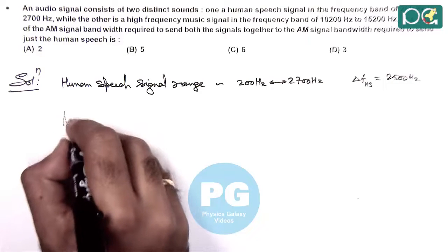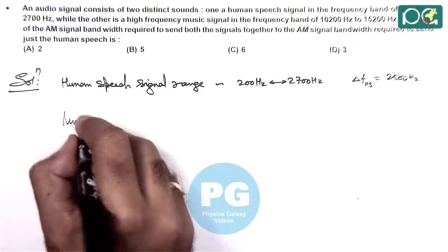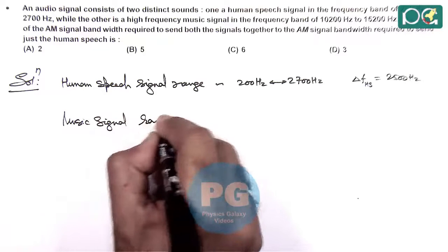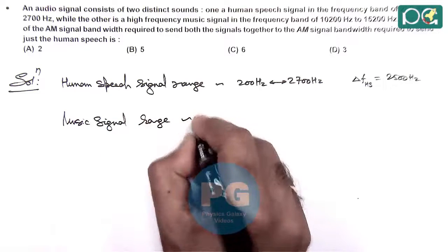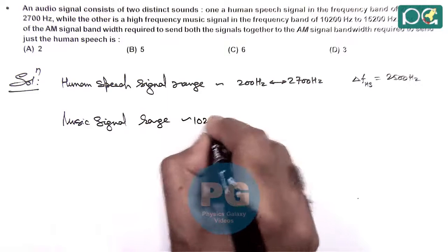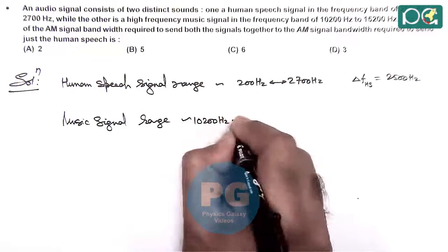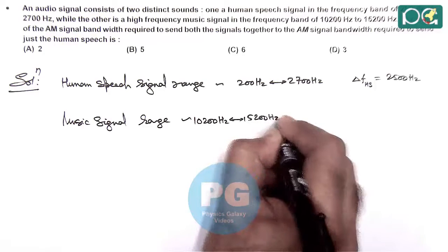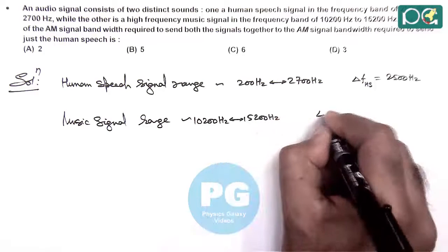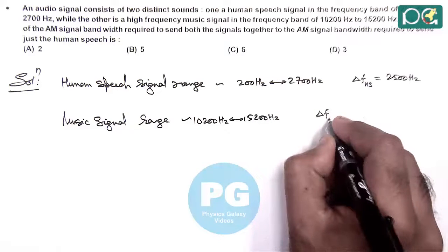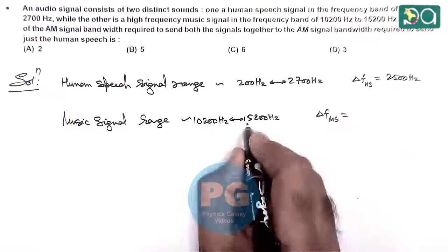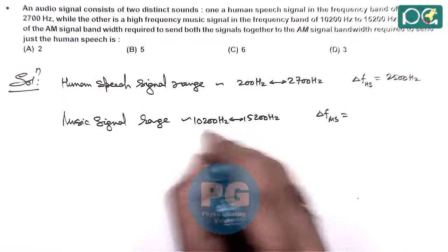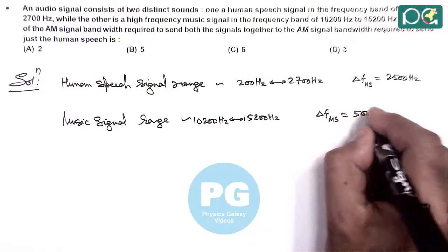If we calculate the music signal range, it is given to us as 10200 Hz to 15200 Hz. So the frequency range for the music signal is 15200 minus 10200 Hz, which gives us 5000 Hz.